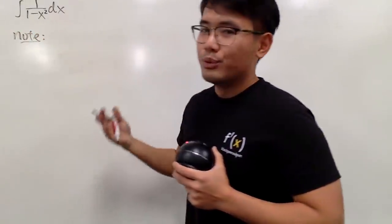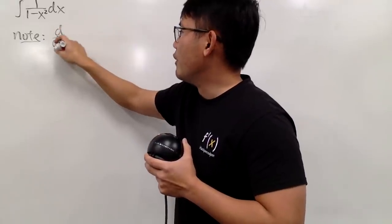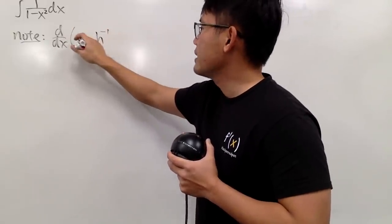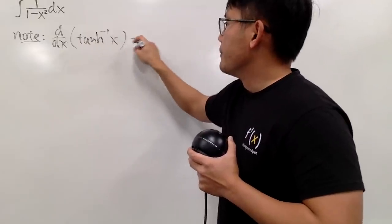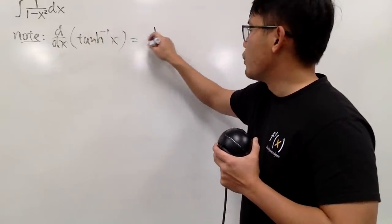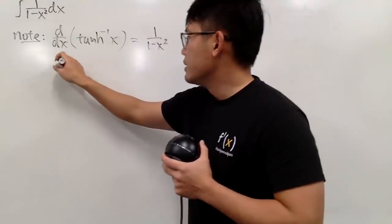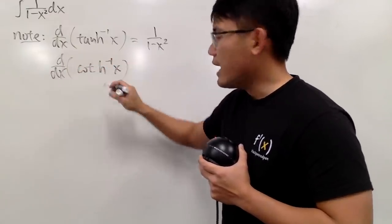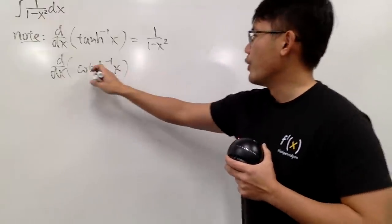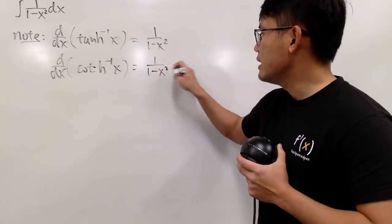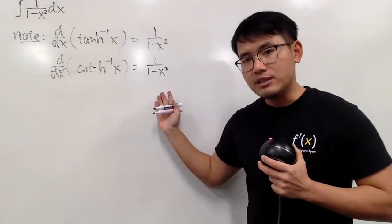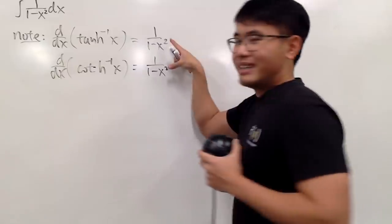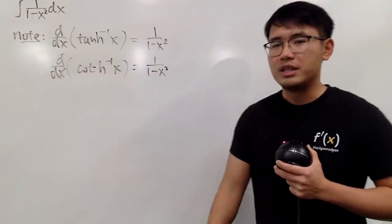For these two, we will have to rely on the fact that the derivative of these two functions will give us 1 over 1 minus x squared. The first function is the inverse hyperbolic tangent — if you differentiate this with input x, you do get 1 over 1 minus x squared. And if you differentiate the inverse hyperbolic cotangent of x, you also end up with 1 over 1 minus x squared. I have a video on this, so be sure to check that out. You can also check it on my shirt — if you differentiate this and that, you do get this and that for the derivative.